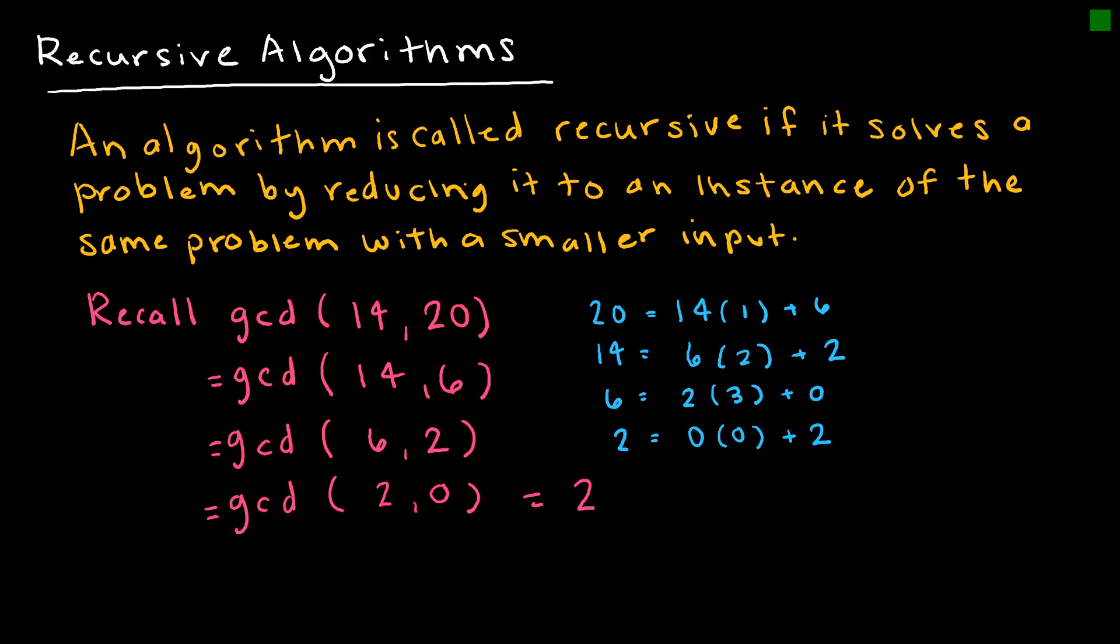So it just keeps doing that over and over. I wrote down an example that should look familiar to you using the Euclidean algorithm. If I wanted to find the GCD of 14 and 20, then what I'm doing is taking 20 and making it equal to 14 times some number plus the remainder, which means using mod. And I can rewrite that as the GCD of the smaller number and the remainder. So that's equal to the GCD of 14 and 6. Now I'm dealing with the same problem, but smaller inputs. Then I repeat that process and get 6 and 2.